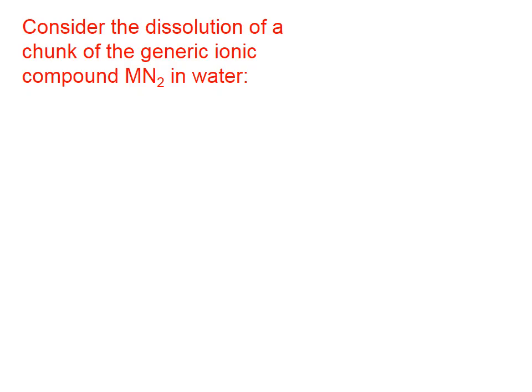Consider the dissolution of a chunk of the generic ionic compound MN₂ in water, where M indicates metal and N indicates nonmetal. This could be, for example, calcium chloride, where the metal ion calcium would have a 2+ charge and each chloride ion — there being two of them — would each have a negative one charge.